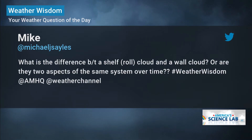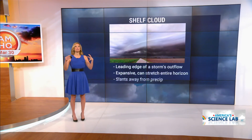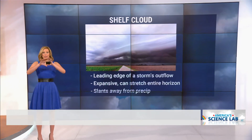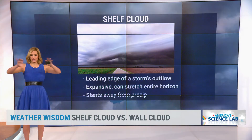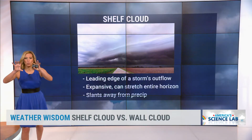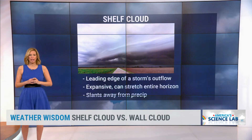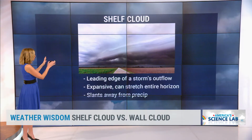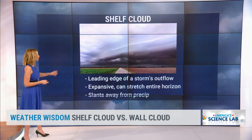We're going to focus in on shelf cloud and wall cloud because those are the ones that you see most often. A roll cloud is basically — think of a cloud that looks like a Swiss roll that is away from a thunderstorm. But we'll show you that a little bit later. Let's have a look at a shelf cloud.